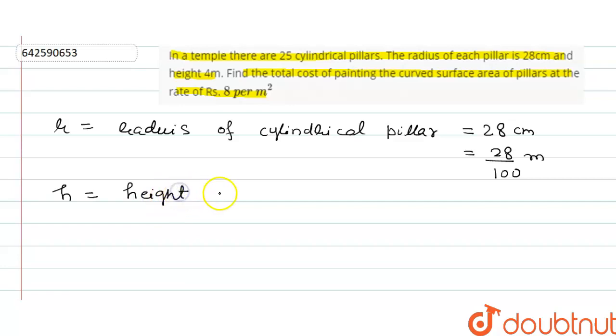height of cylindrical pillar, that is 4 meters.